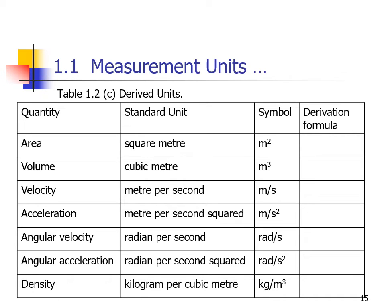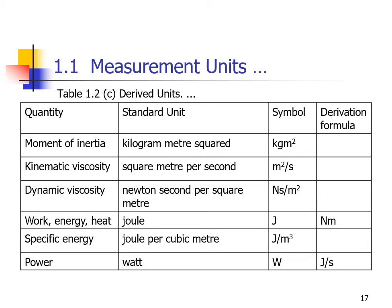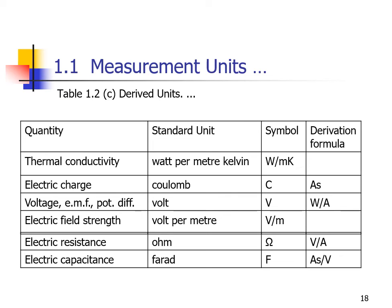Derived SI units include: area in square meters, volume in cubic meters, velocity in meters per second, acceleration in meters per second squared, angular velocity in radians per second, angular acceleration in radians per second squared, density in kilograms per cubic meter, mass flow rate in kilograms per second, volume flow rate in cubic meters per second, force in Newtons, torque in Newton-meters, momentum in kilogram-meters per second, kinematic viscosity in square meters per second, dynamic viscosity in Pascal-seconds, work and heat energy in Joules, power in Watts, and thermal conductivity in Watts per meter-Kelvin.